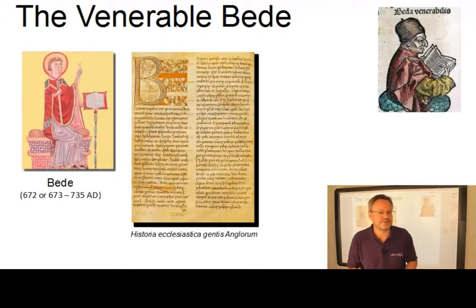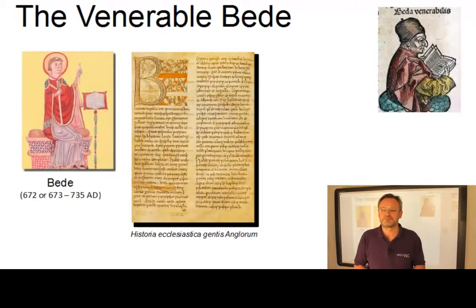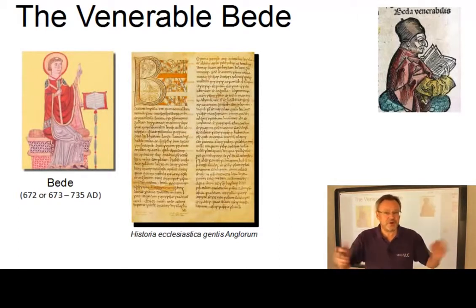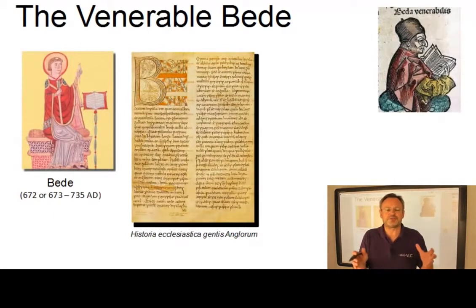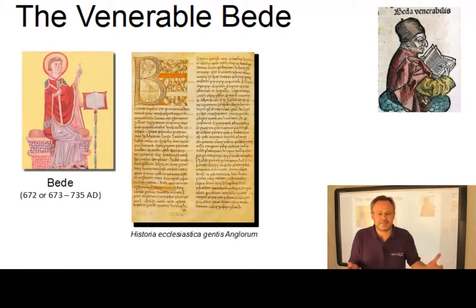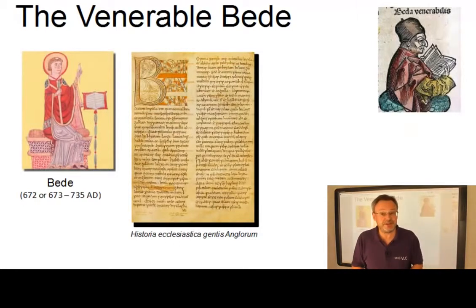His words, written in 737, when his death was not far off, not only show a simplicity and piety characteristic of that man, but they throw a light on the composition of the work through which he is best remembered by the world at large. Venerable Bede is the earliest witness of pure Gregorian tradition in England, and his works Musica Theoretica and De Arte Metrica are found especially valuable by present-day scholars engaged in the study of the primitive form of the chant.